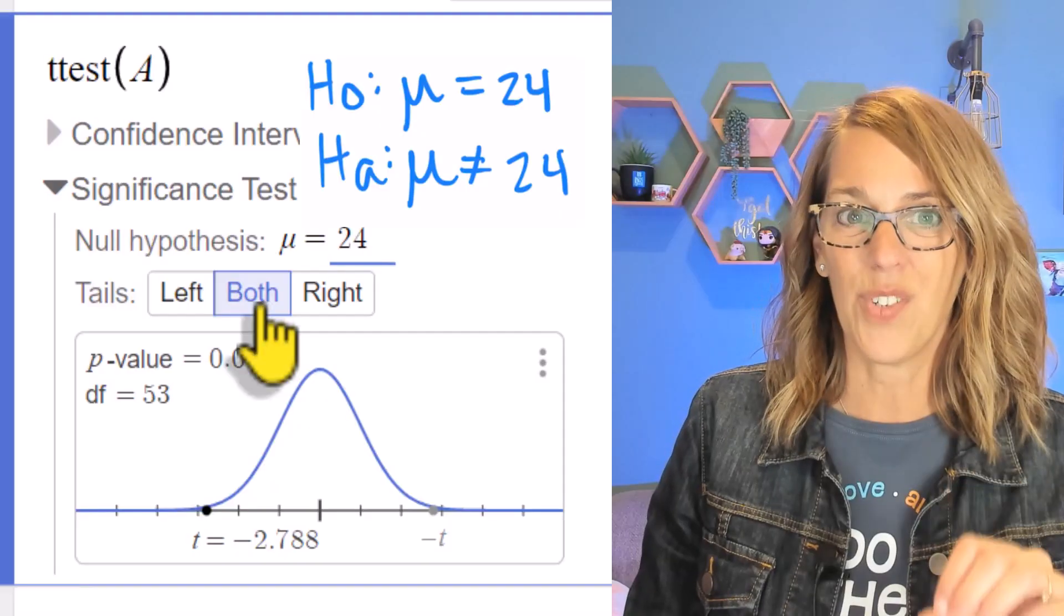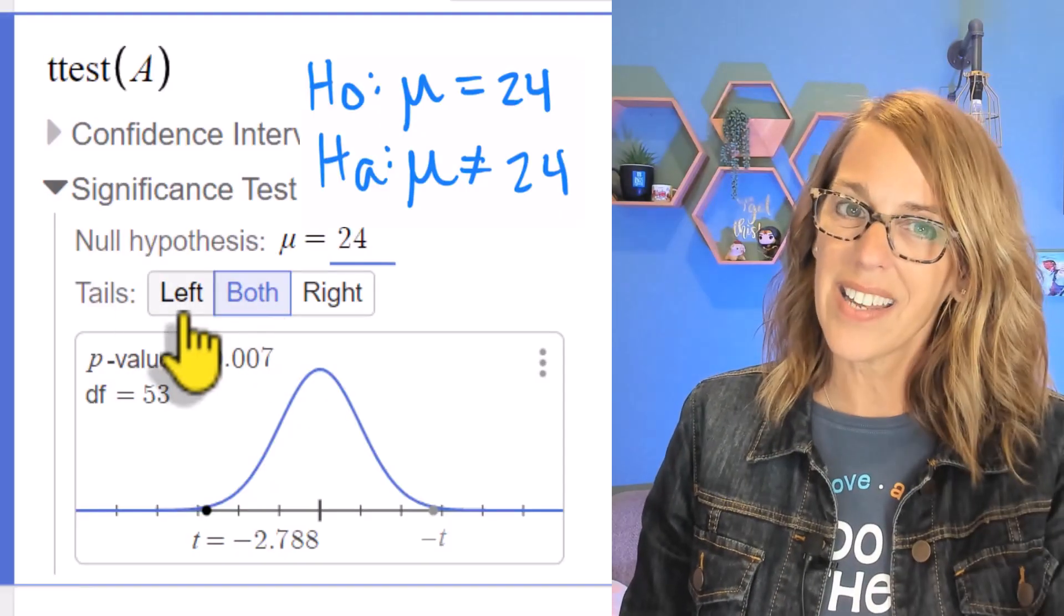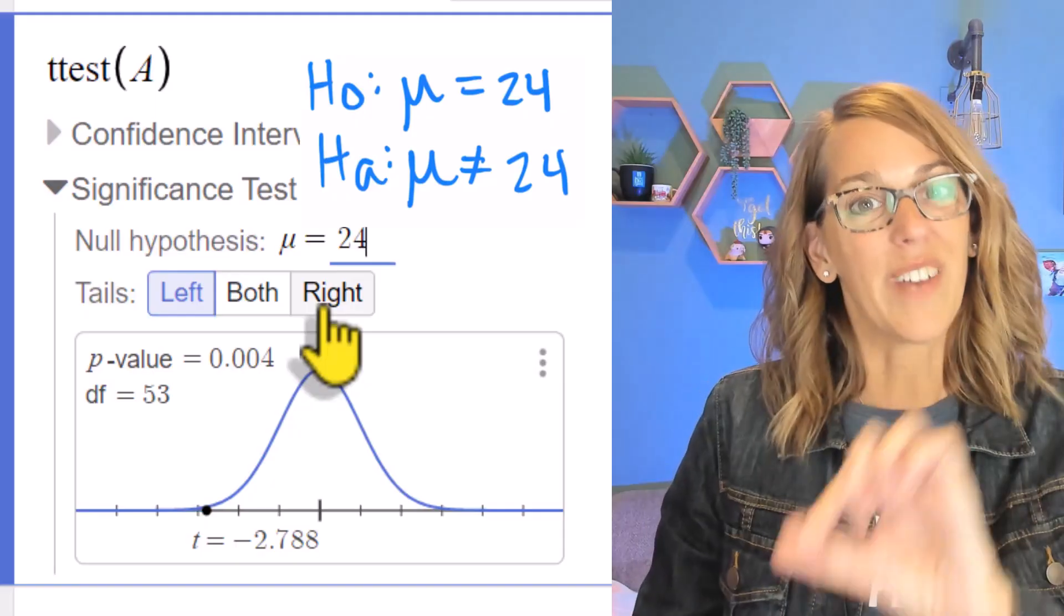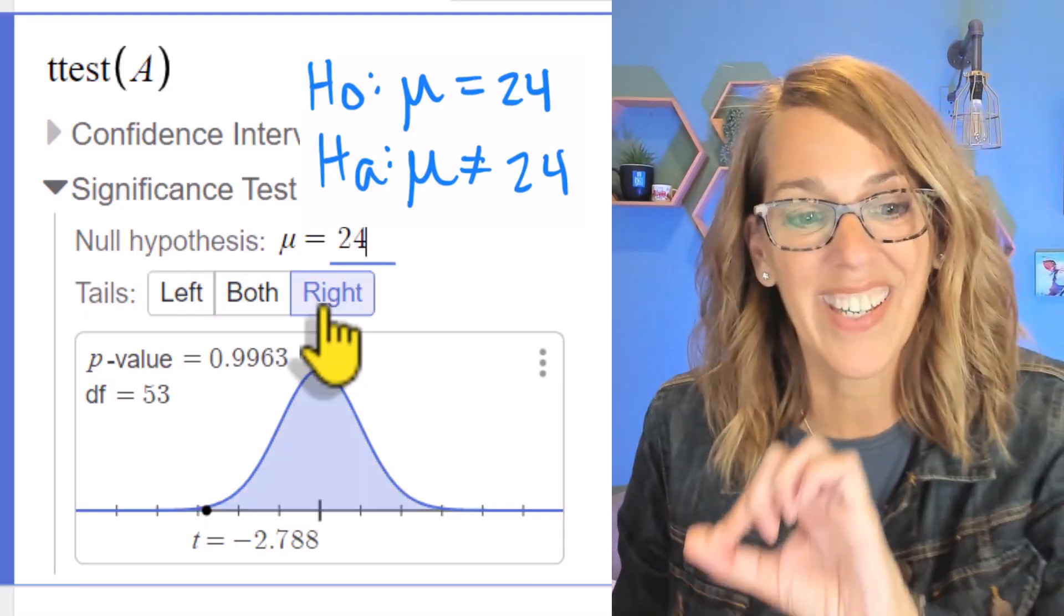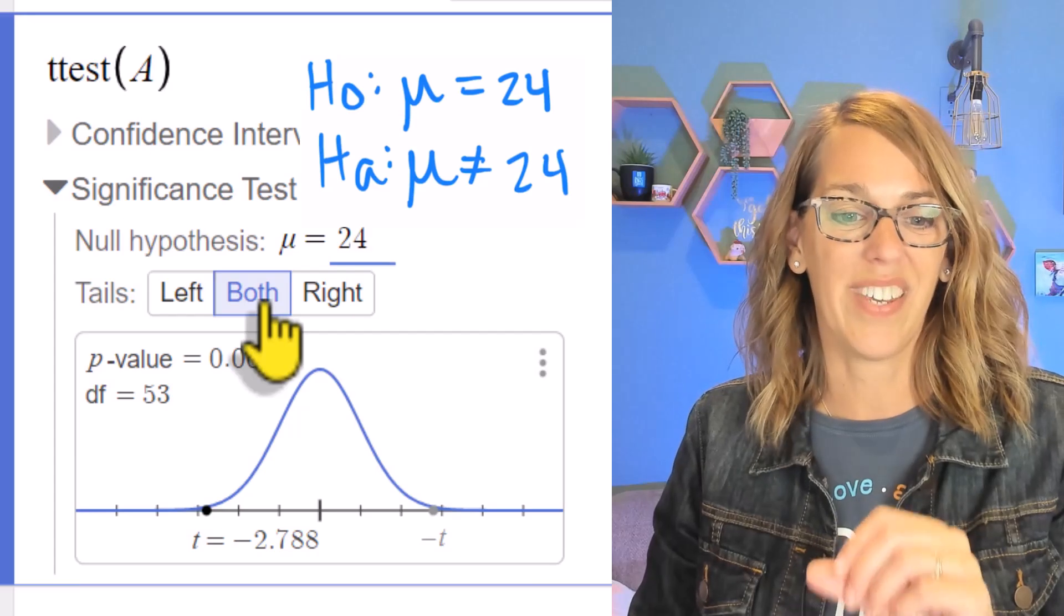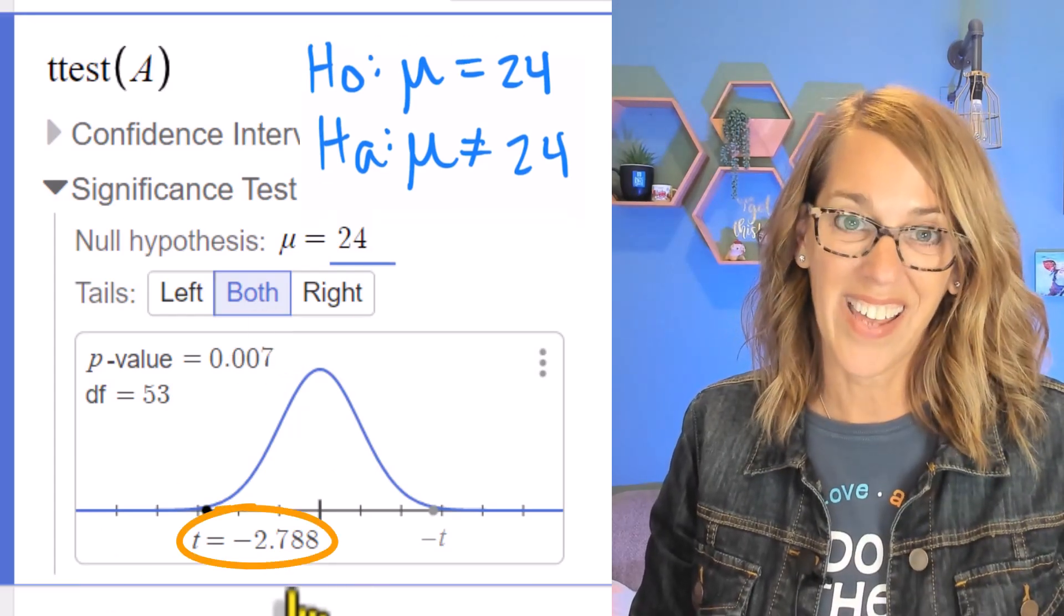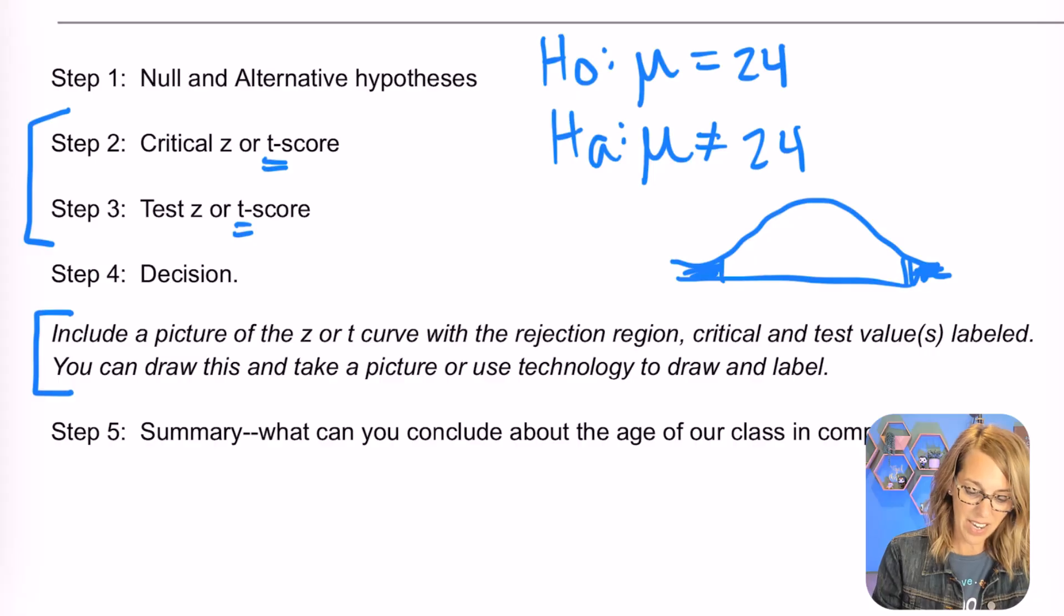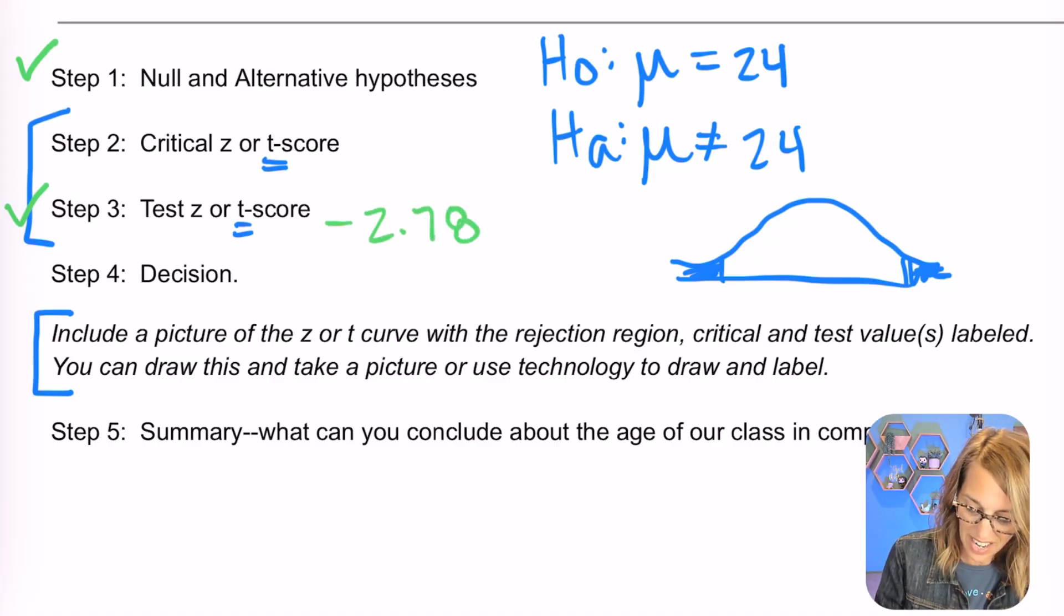Tails, I do have two tails. If you had a less than in your alternative hypothesis it would be on the left. If you had a greater than in your alternative hypothesis it would be pointing to the right. But we do want both here and it gives me that test t-value. So as I go back I've got my hypotheses and I've got my test t-score and that was a negative 2.788.